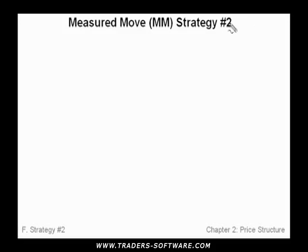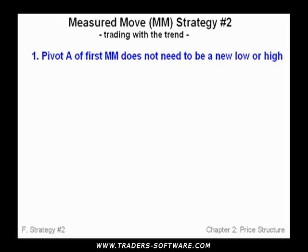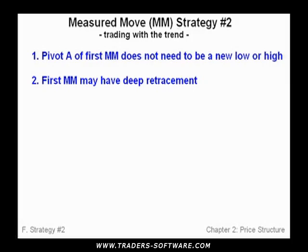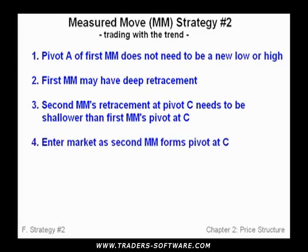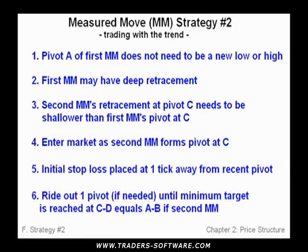Measured move strategy number two. Rule one: pivot A of the first measured move does not need to be a new low or high. Rule two: the first measured move may have deep retracement. Rule three: the second measured move's retracement at pivot C needs to be shallower than the first measured move's pivot at C. The rest of the rules are the same as in strategy number one.